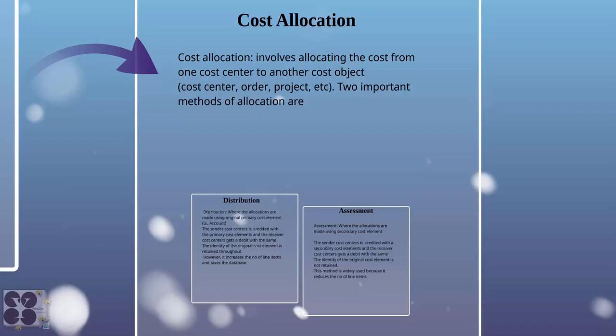Cost allocation is another way where we allocate cost from one cost center or cost object to another cost object. This can be done in the case of cost centers, orders, projects, etc. There are two important methods of allocation: distribution and assessment.